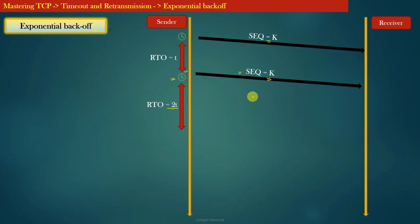Now let us assume that this data segment is also lost in the network. So what will TCP do? The TCP, after expiration of this retransmission timer, will again retransmit the same segment and restart the retransmission timer.